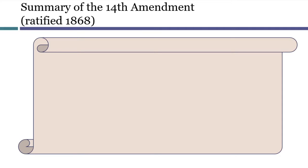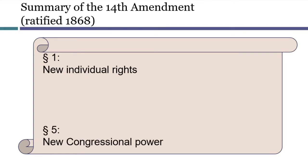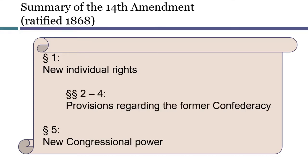The 14th Amendment can best be summarized in three portions. Section 1 created new rights that state governments had to respect. Section 5 gave Congress new powers to enforce those new rights. Sections 2, 3, and 4 were primarily designed to deal with the readmission of the former Confederate states back into the Union. While portions of these sections have some continuing effects, by and large they have become less important over time.